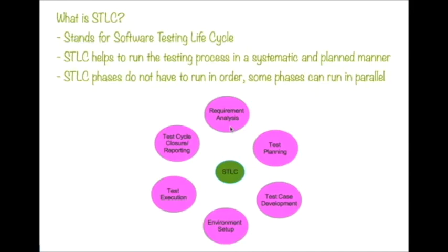STLC phases do not have to run in order — some can run in parallel. However, some phases need to be completed before moving to the next. For example, requirement analysis must be done before test planning can start. Test planning and test case development can be done in parallel. Before test execution, environment setup needs to be taken care of. Test cycle closure requires test execution to be done first. So STLC consists of: requirement analysis, test planning, test case development, environment setup, test execution, and test cycle closure and reporting.